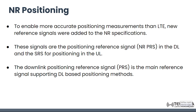New reference signals were added to the specifications to enable more accurate positioning. These include the Positioning Reference Signal, known as NR-PRS, used in the downlink, and SRS used for positioning in the uplink. The downlink PRS is the main reference signal supporting various downlink-based positioning methods.